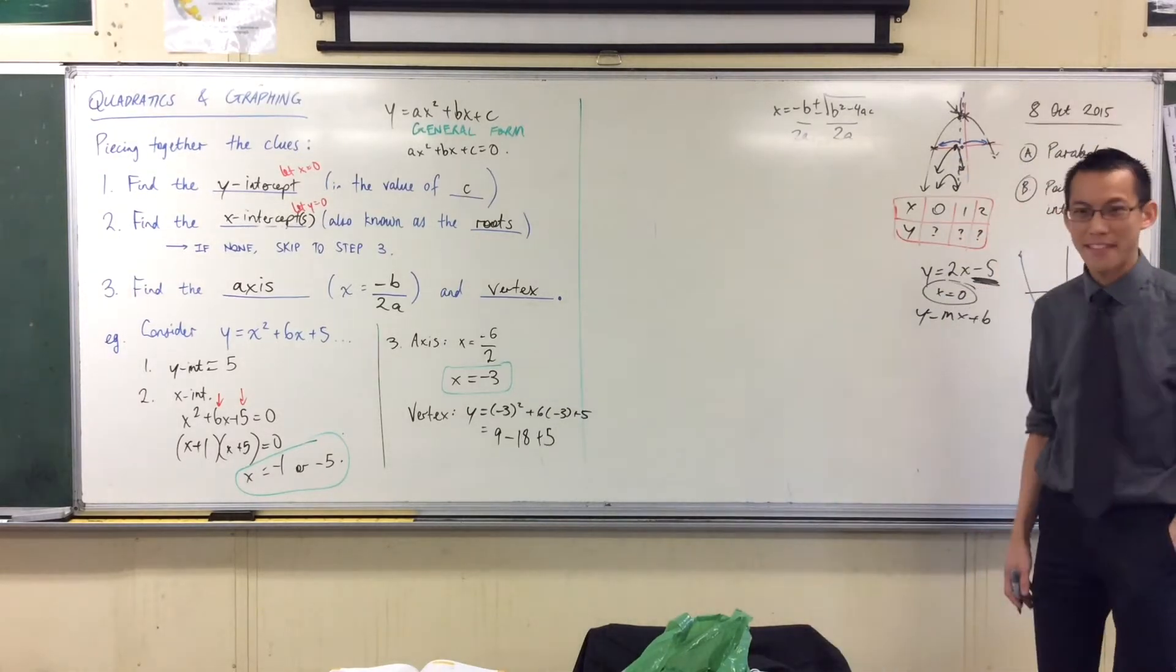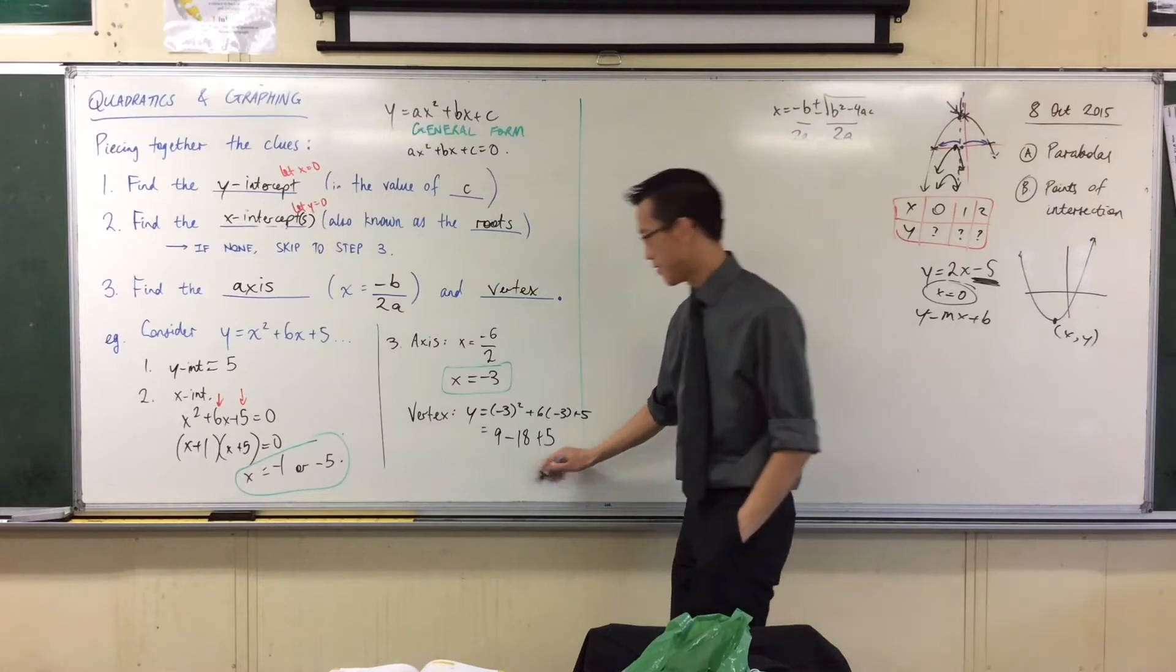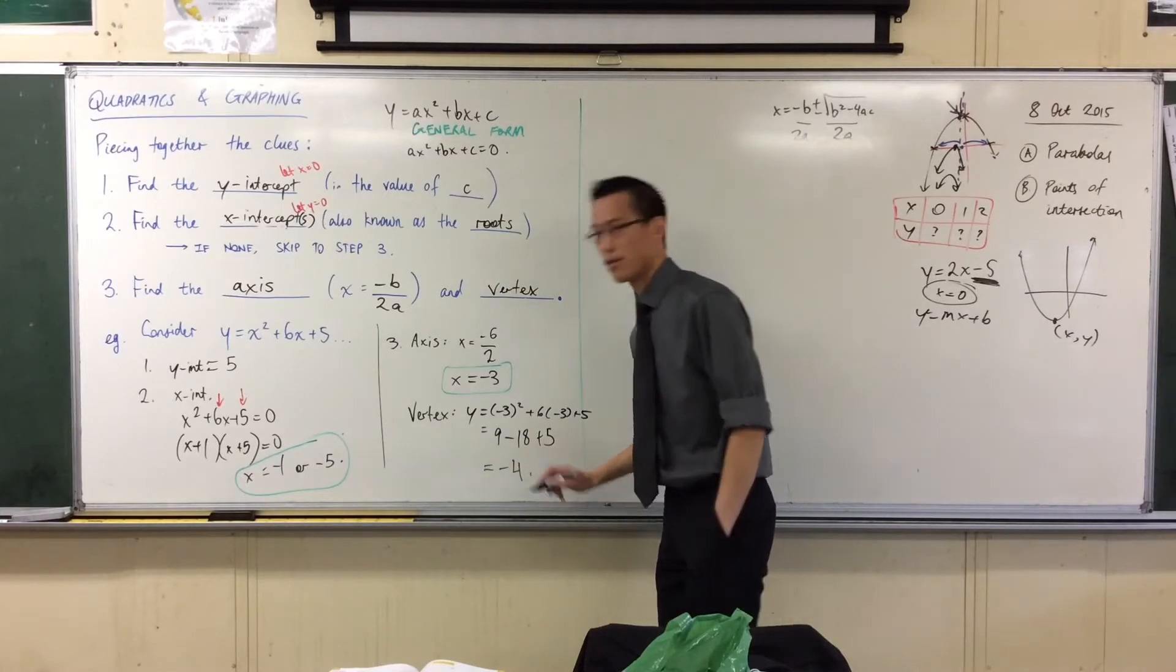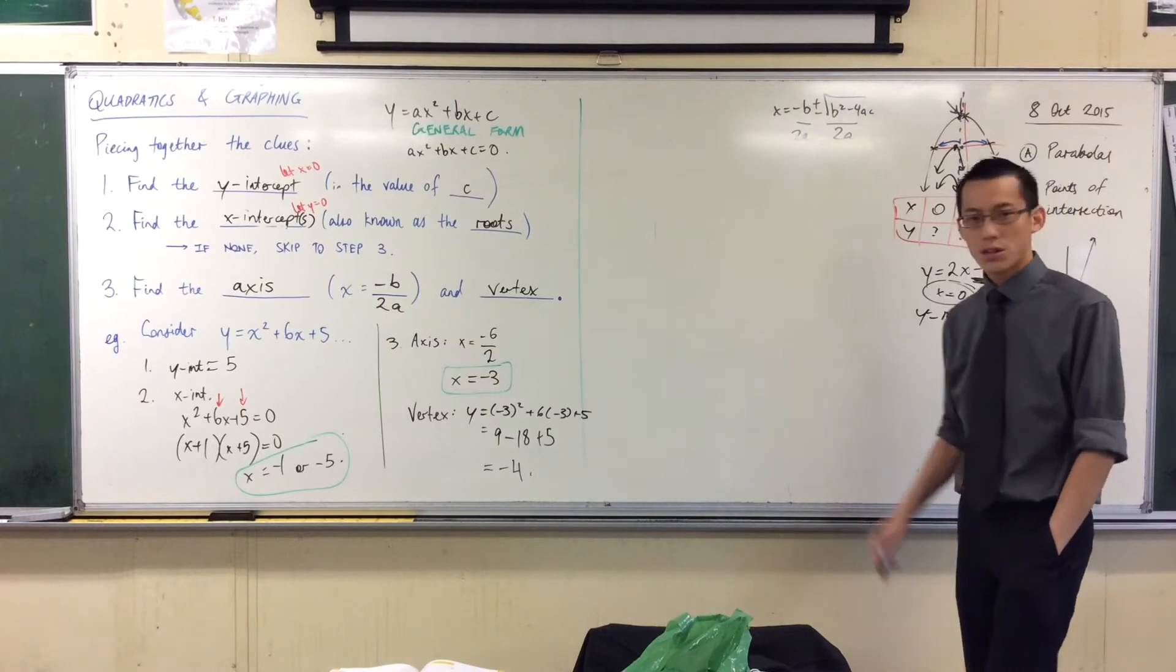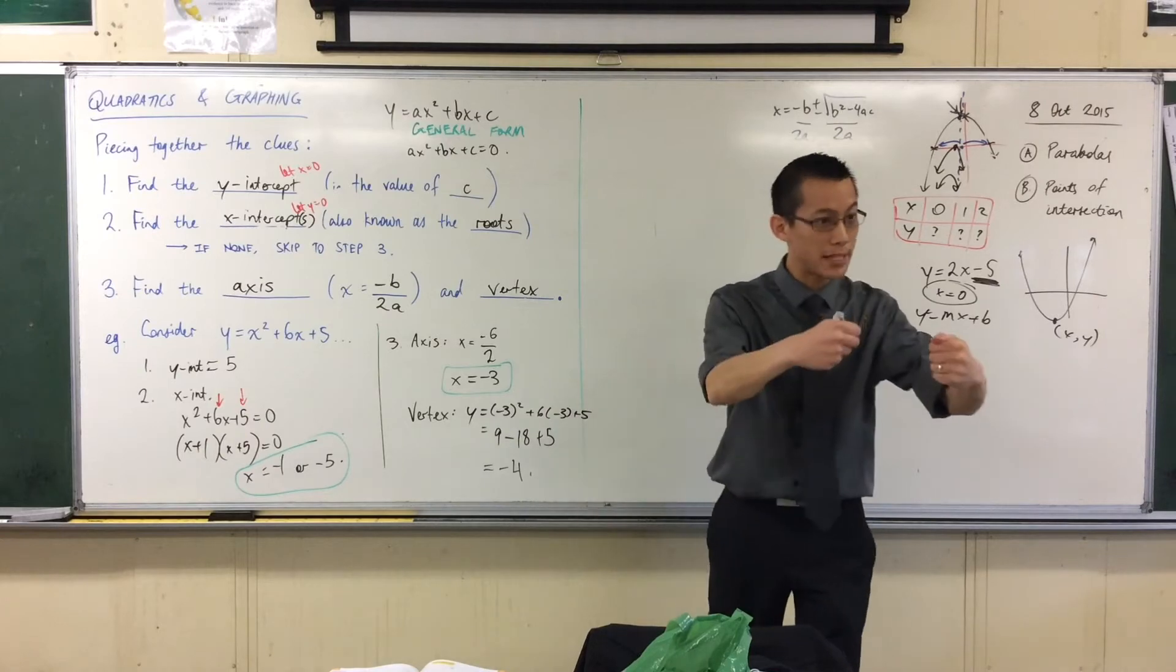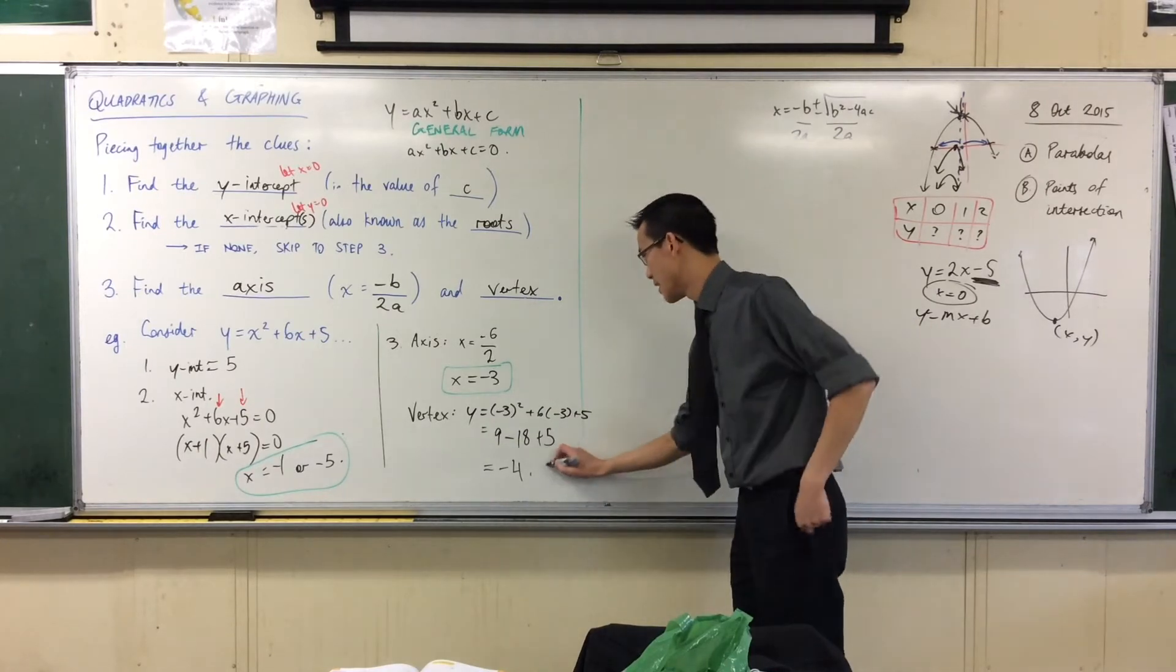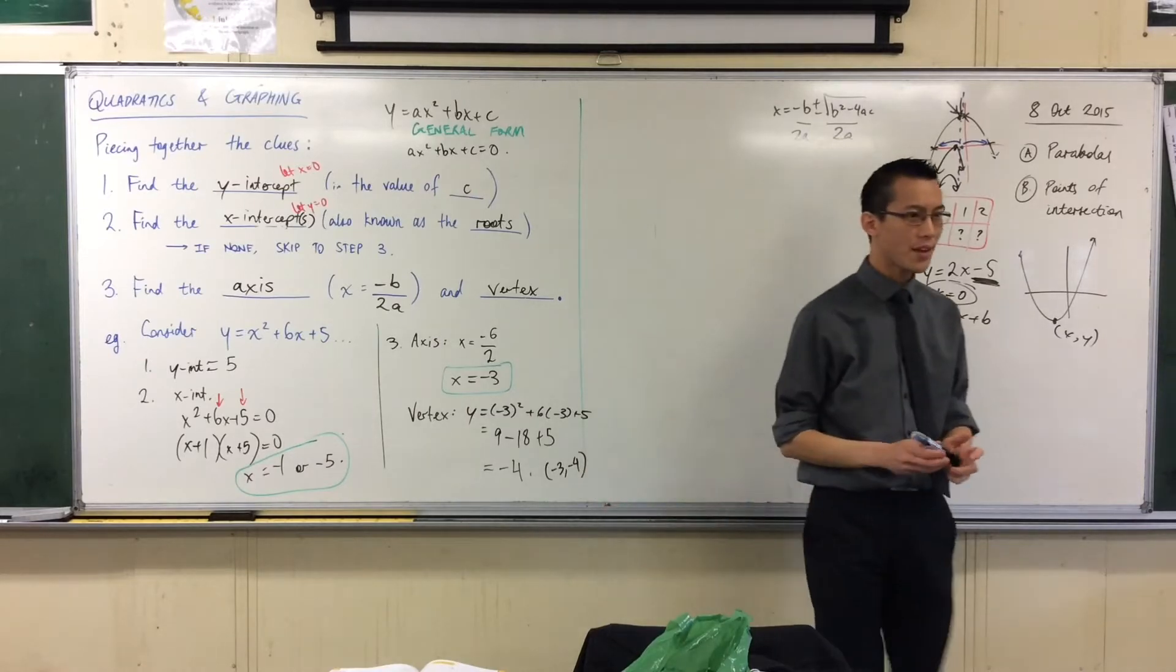9 minus 18, I can do that. That's negative 9. And then I add 5, which is negative 4. And again, your calculator can check that. So now, I have, together with this X value, I have a Y value. You put them together, and you get coordinates. Namely, negative 3, negative 4.